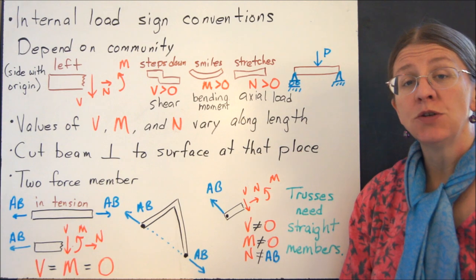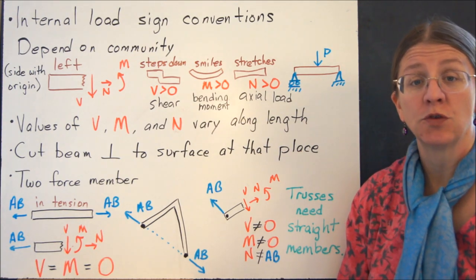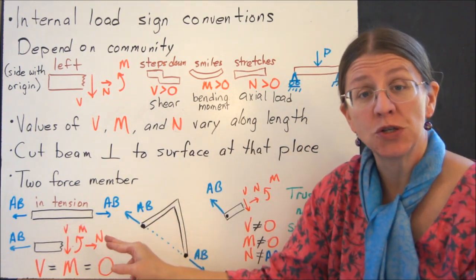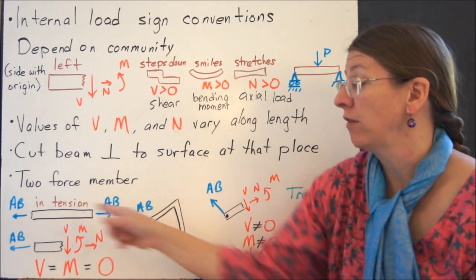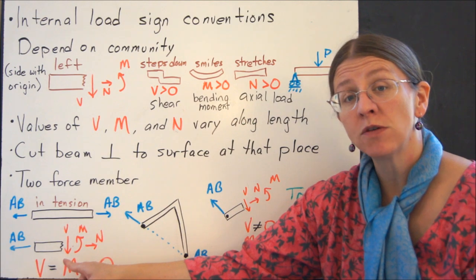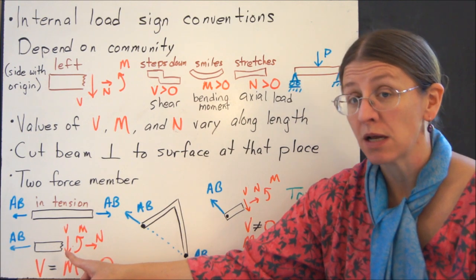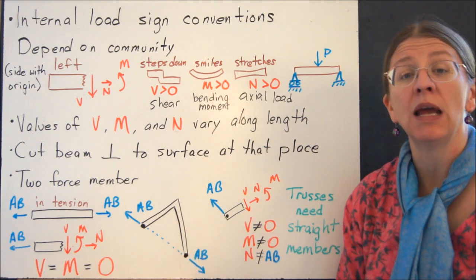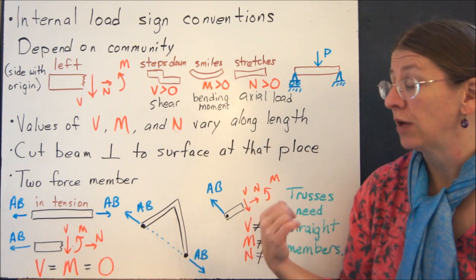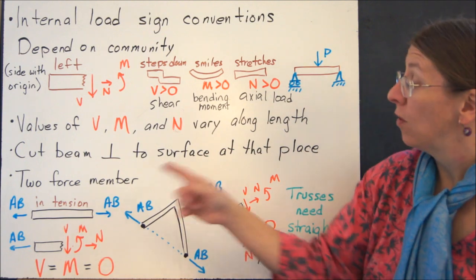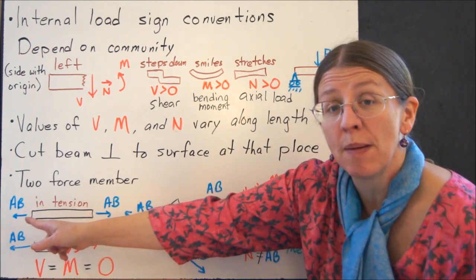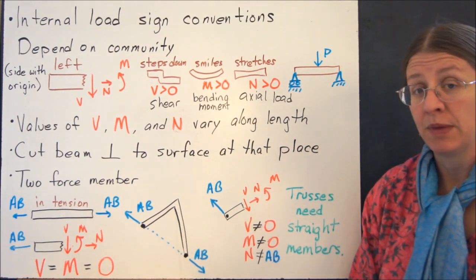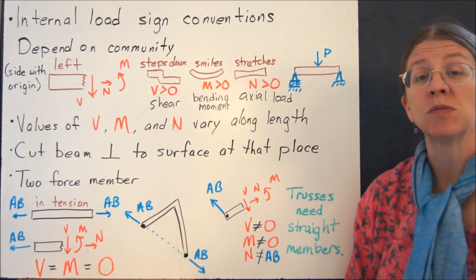And when you're looking at a two-force member, we started with the notion of sections. When we cut them apart, we had beams that we were assuming were in tension, so you had a load on either side. When you cut one of those in half, or anywhere else along the beam, and put the sign conventions on here, you can notice that V and M have to be equal to zero. And your axial load, N, is the force along the two-force member. That's, N is going to be equal to AB.